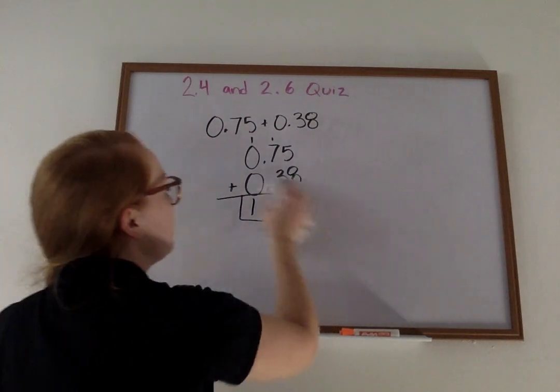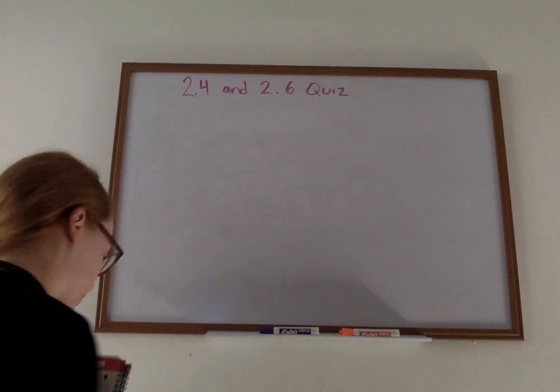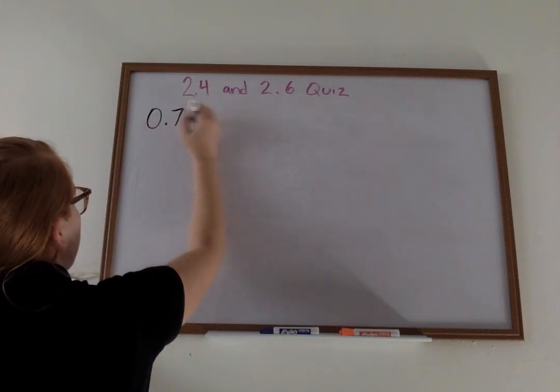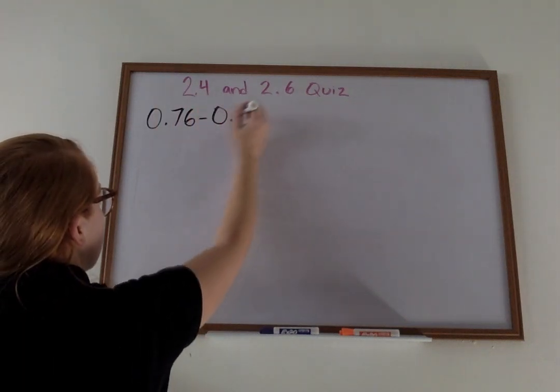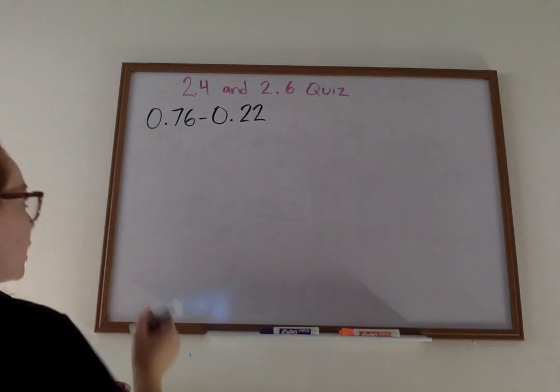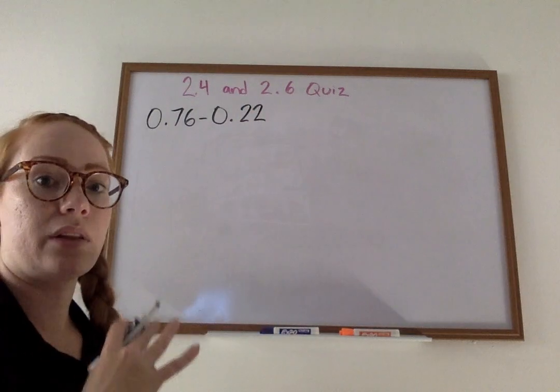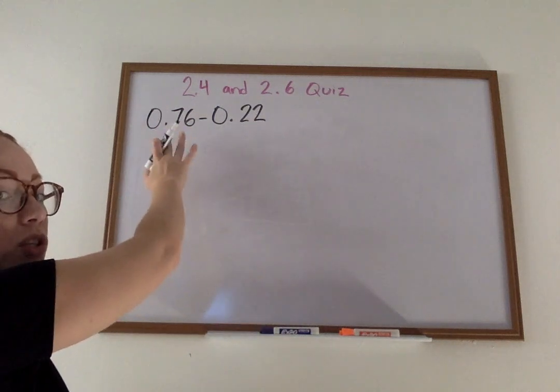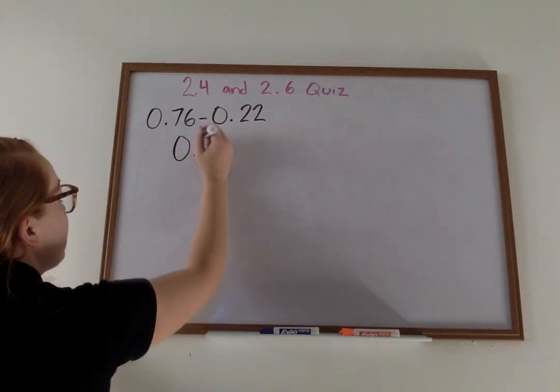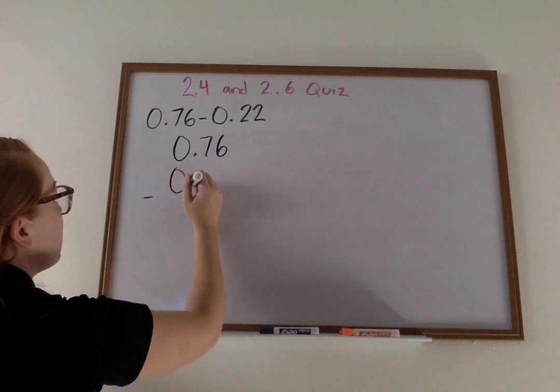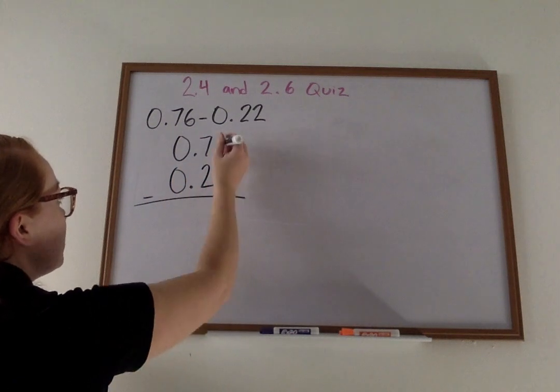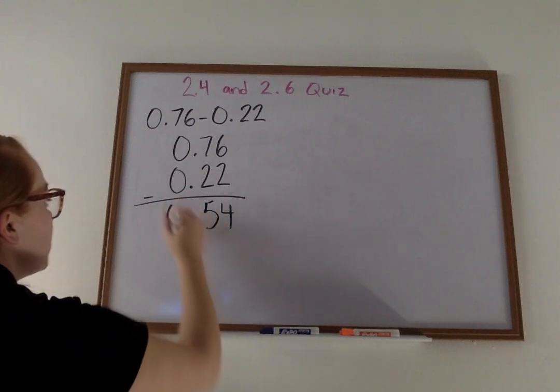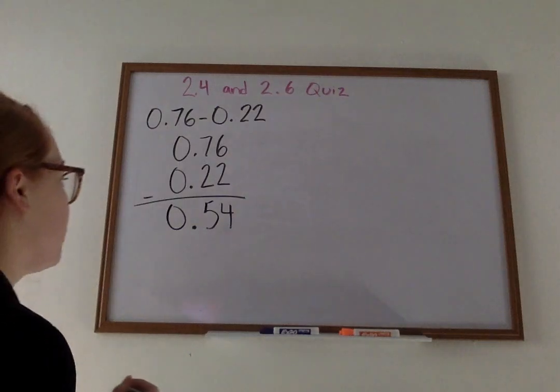Let's look at another one. Let's say we have 76 hundredths minus 22 hundredths. Now a lot of you ask, can I move them? Can I put this one on top and this one on the bottom? No. Whichever one comes first, you need to put on top. 76 hundredths minus 22 hundredths. 6 minus 2 is 4, 7 minus 2 is 5. Bring down my decimal and my 0. So it should be 54 hundredths.